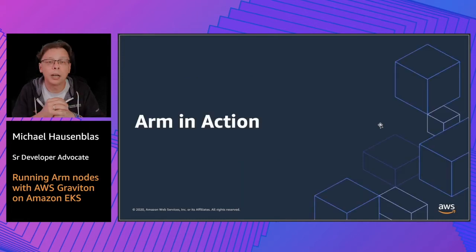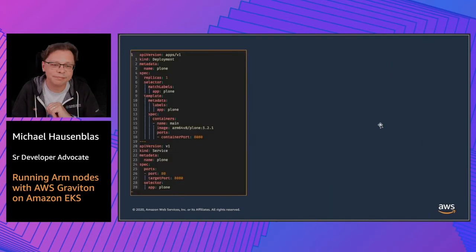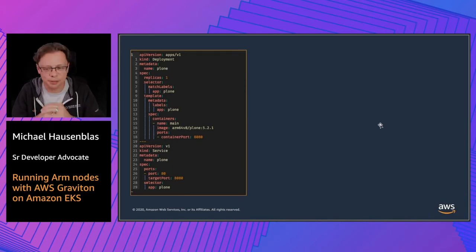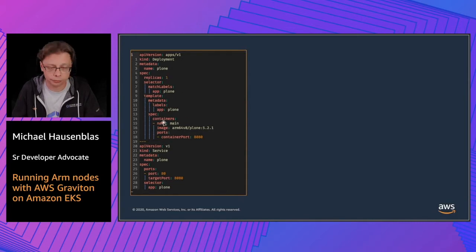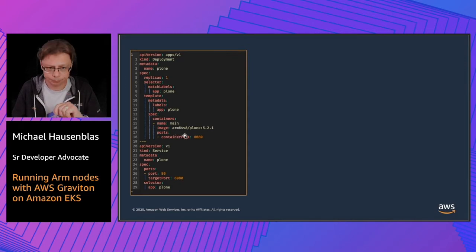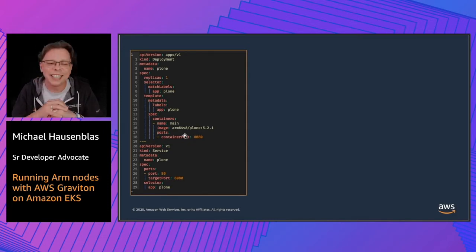With that, we're switching to ARM in action. I've prepared a straightforward application in EKS — a Kubernetes manifest on the left-hand side containing a deployment and a service. In that deployment spec, in the container spec, the image name ARM64v8 indicates that this is an ARM-based architecture image being used.